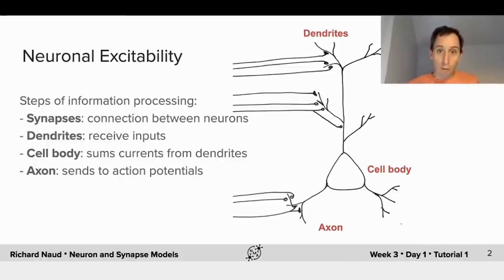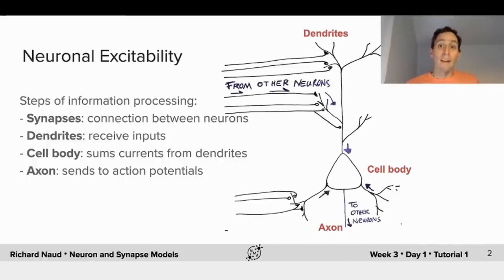When an input comes from other neurons, it first goes through synapses, and then dendrites, and then goes to the cell body, where the decision of making an action potential is being made.